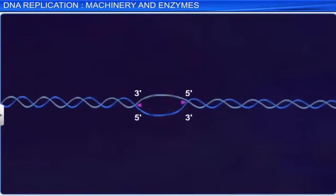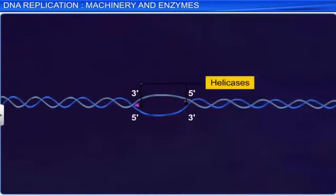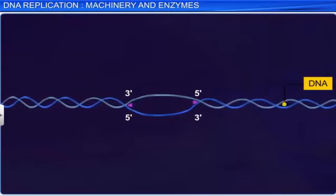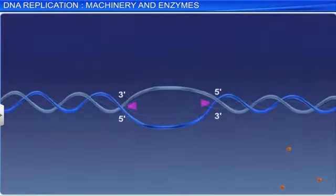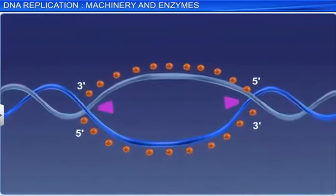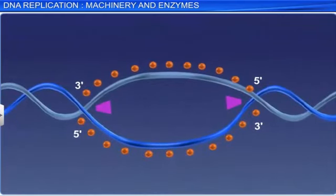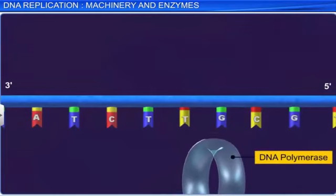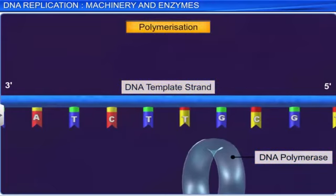During replication, first the enzyme helicases unwind and uncoil the DNA double helix into single strands of DNA by the breakdown of hydrogen bonds. However, the main enzyme that catalyzes the replication process after it begins at the origin of replication is DNA polymerase, which is said to be DNA-dependent, as it uses the DNA template to catalyze the polymerization of deoxyribonucleotides.